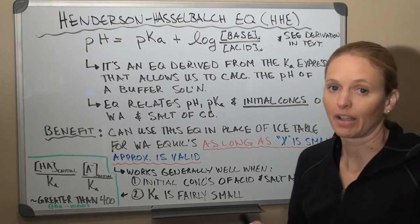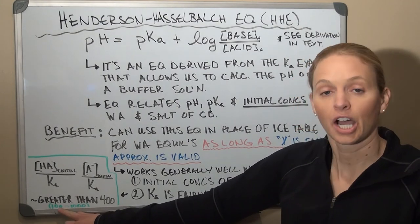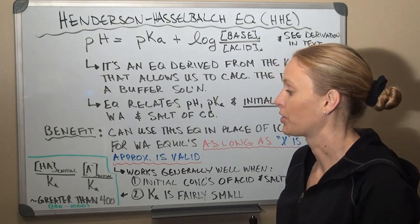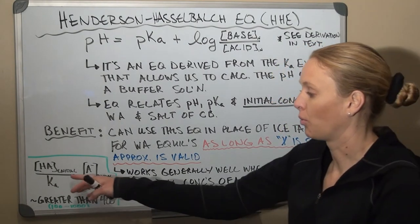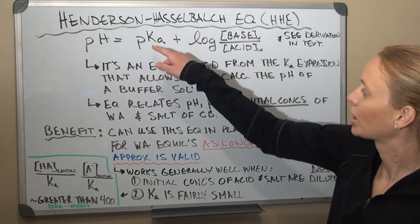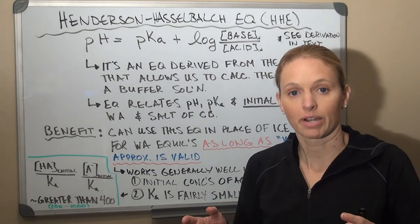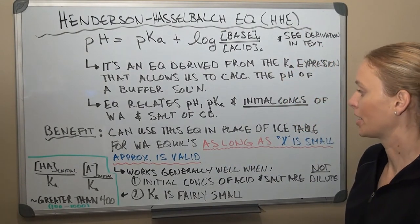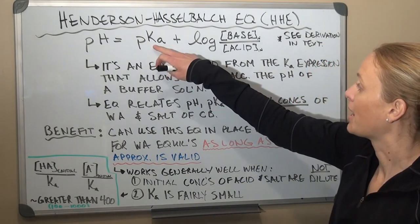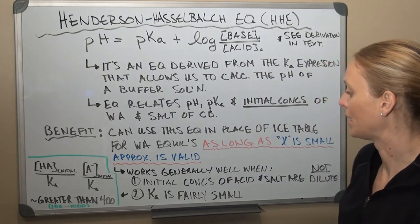When the ratio of initial concentration to Ka is greater than about 400, the percent dissociation is less than 5%, and we can assume the approximation is valid. Sometimes it can be as low as 100 or as high as 1,000 depending on the specific numbers. If both species meet that ratio range, we can use the Henderson-Hasselbalch equation instead of the ice table.